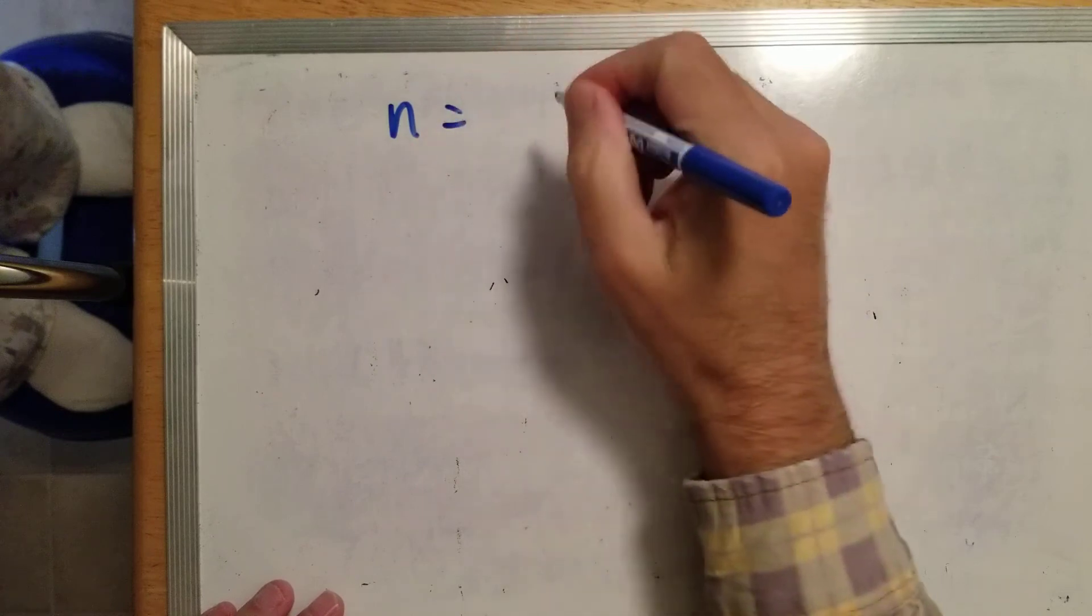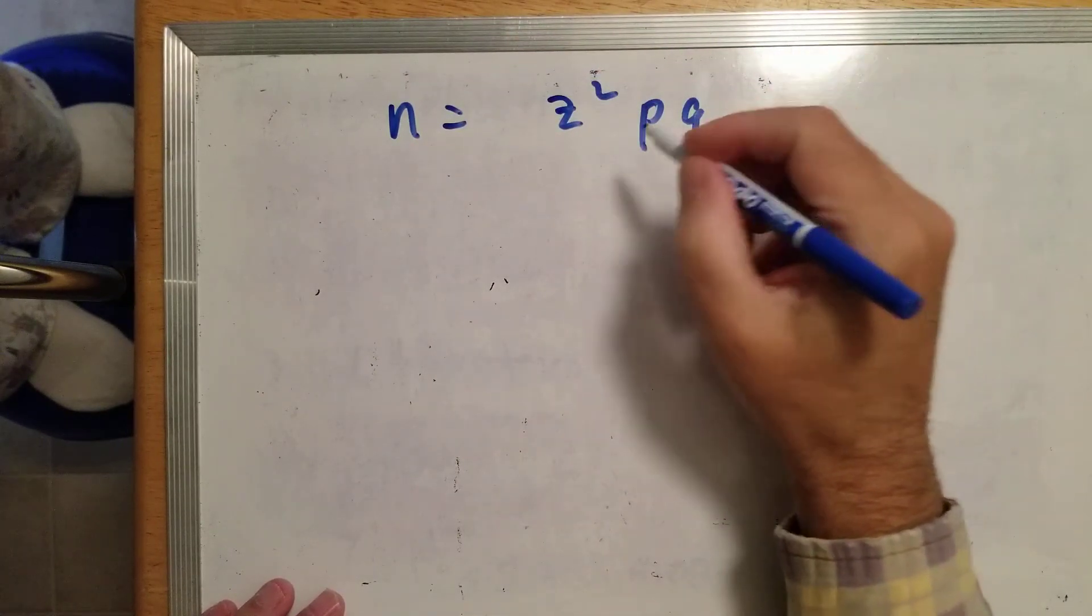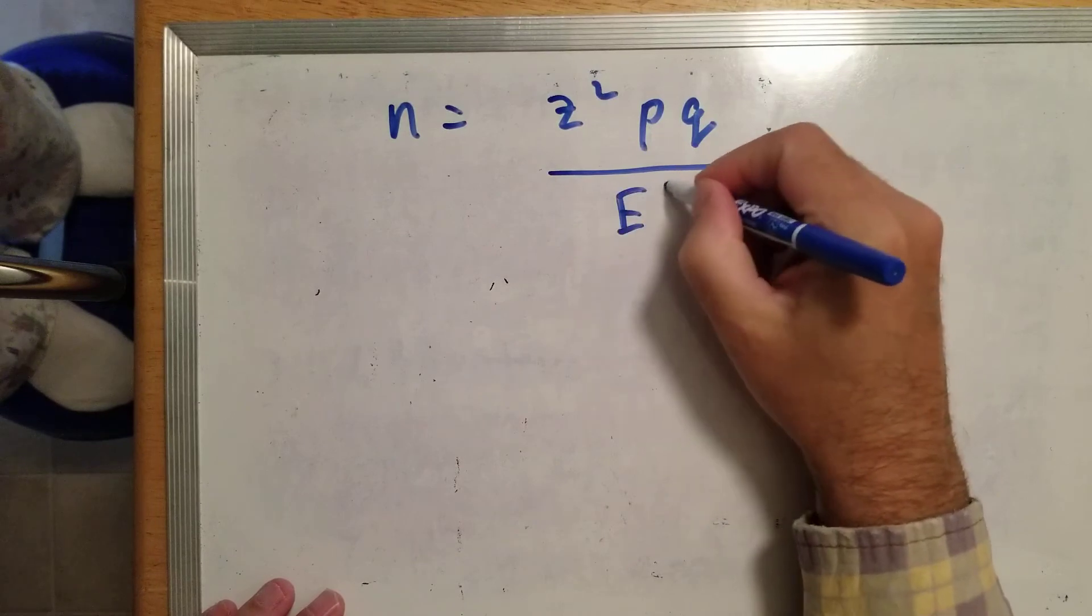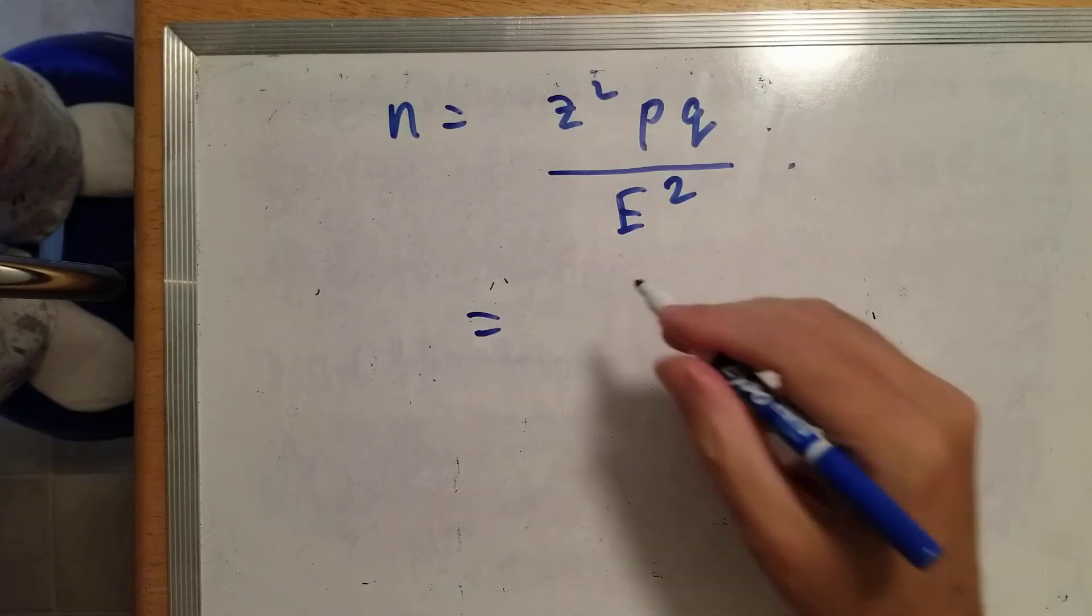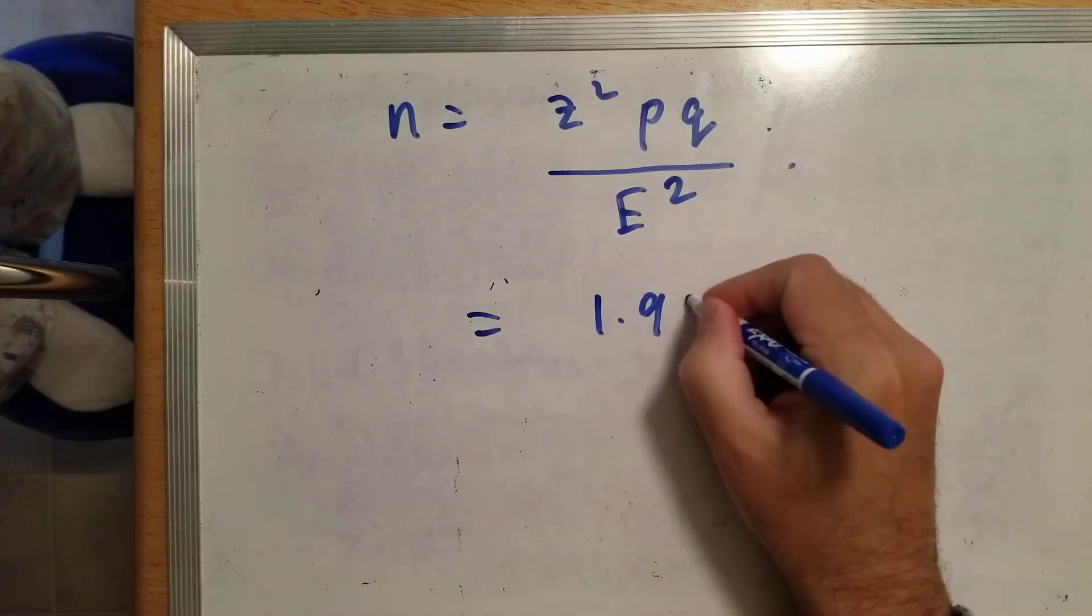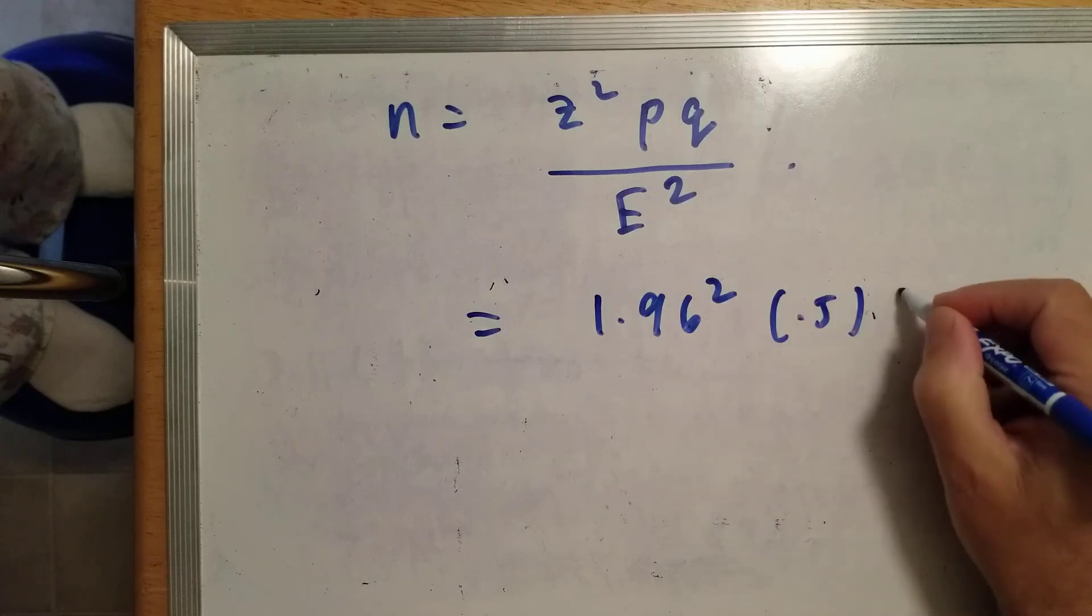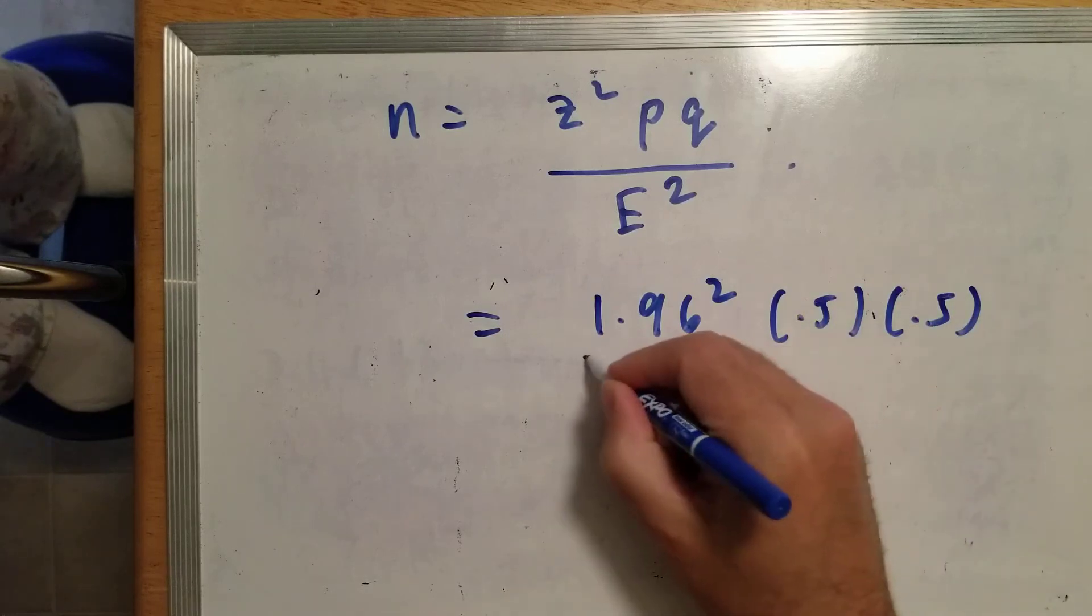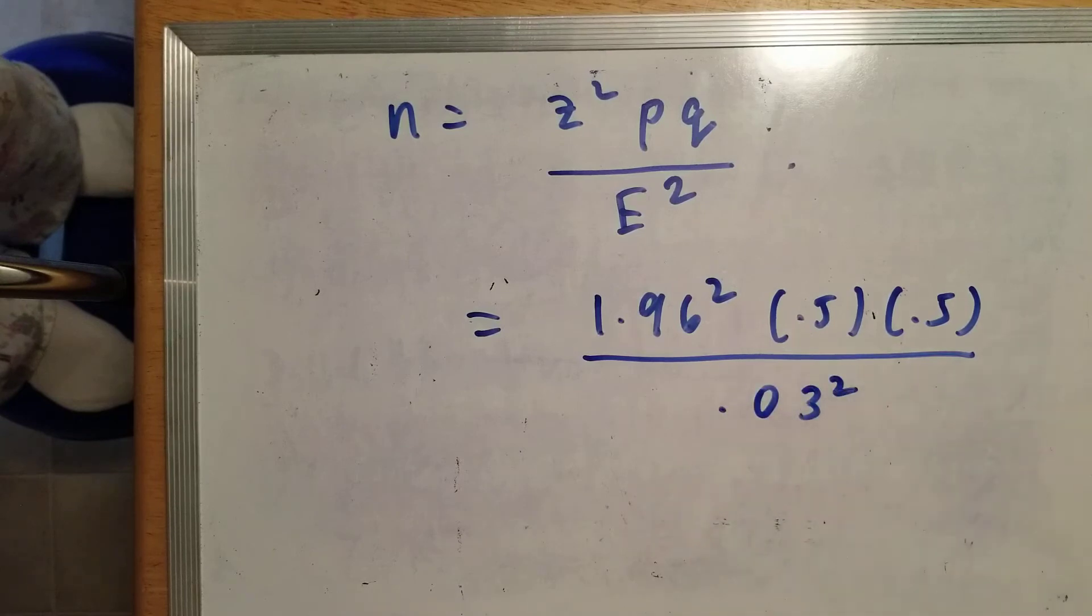N equals Z squared PQ over E squared. Because the confidence level was 95%, I'm using 1.96 for Z. P is 0.5, Q is 0.5, and E is 3%, which is 0.03 squared. On the calculator,